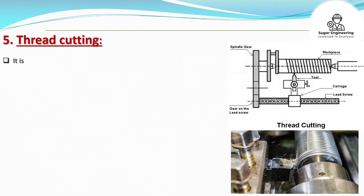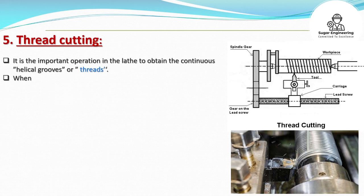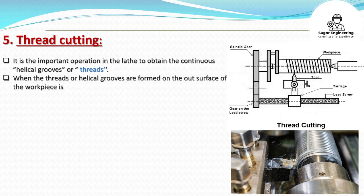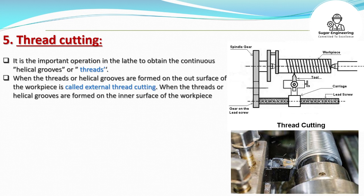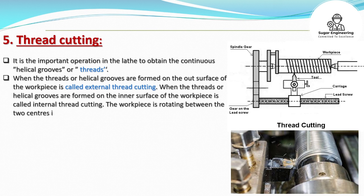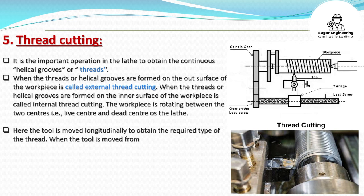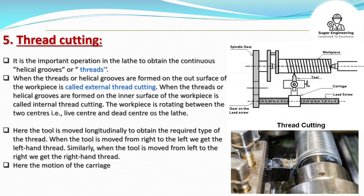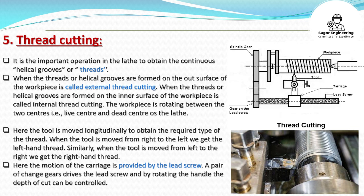Thread cutting is an important lathe operation to obtain continuous helical grooves or threads. When threads are formed on the outer surface it is called external thread cutting; on the inner surface, internal thread cutting. The workpiece rotates between the live center and dead center. The tool moves longitudinally — from right to left for left-hand thread, and left to right for right-hand thread. The carriage motion is provided by the lead screw, driven by a pair of change gears, and the depth of cut is controlled by rotating the handle.